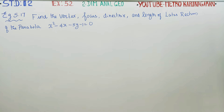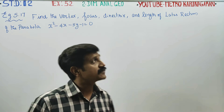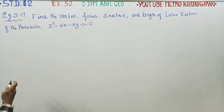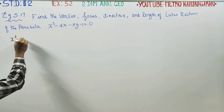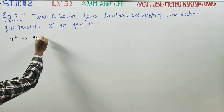Dear 12th standard students, in exercise number 5.2, a related example, example 5.17: find the vertex, focus, directrix, and the length of the latus rectum of the parabola. First of all, our parabola is in standard format. The equation is x² - 4x - 5y - 1 = 0.